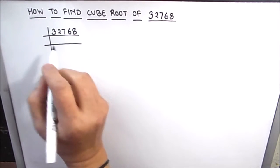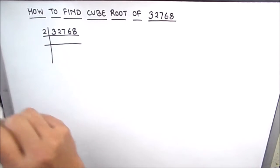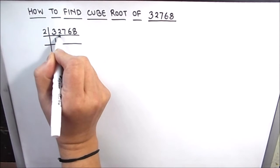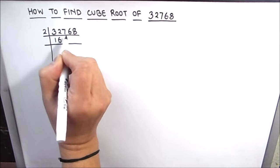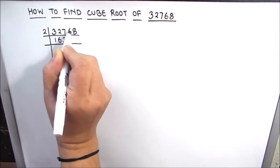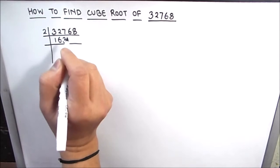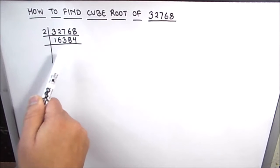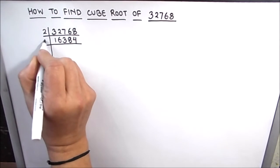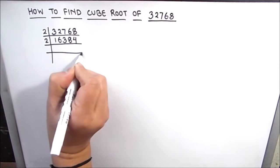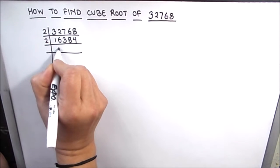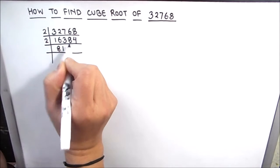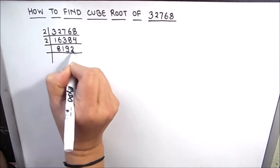As this is an even number, let's try dividing it by the first prime number, which is 2. So 2 times 1 is 2, 1 is carried over so this becomes 12, 2 times 6 is 12, 2 times 3 is 6, 1 is carried over this becomes 16, 2 times 8 is 16, and 2 times 4 is 8. We got an even number again so we divide by 2 again. 2 times 8 is 16, 2 times 1 is 2 and 1 carried over becomes 18, 2 times 9 is 18, and 2 times 2 is 4.